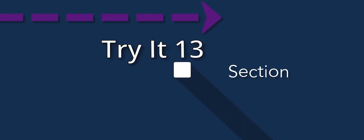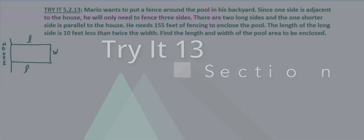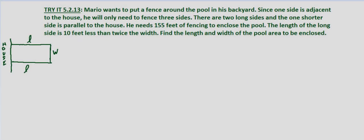With this problem we're given the scenario that Mario wants to put a fence around the pool in his backyard. One side is adjacent to the house so he only needs to fence three sides - in other words the house encloses it on one side. There are two long sides and the one shorter side is parallel to the house. He needs 155 feet of fencing to enclose the pool. The length of the long side is 10 feet less than twice the width. Find the length and width of the pool area to be enclosed.